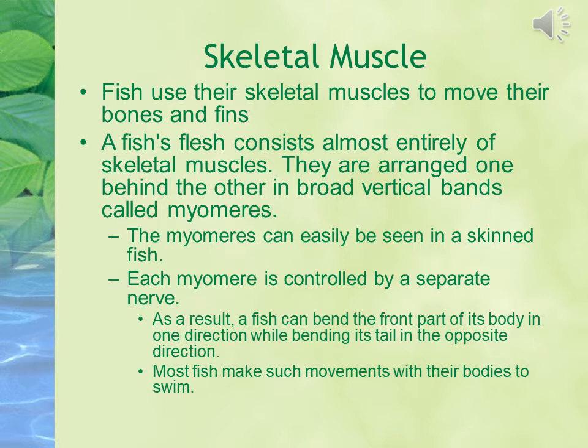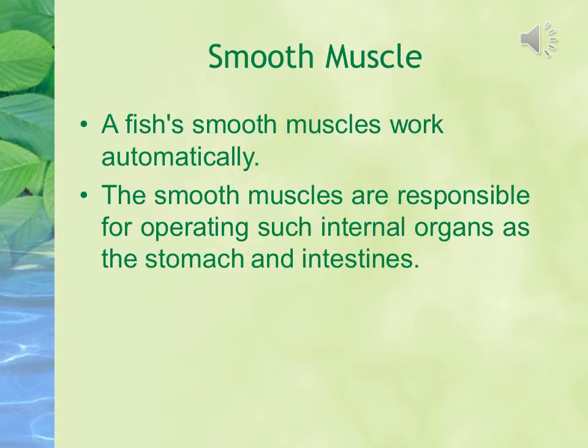Each myomere is controlled by a separate nerve. As a result, a fish can bend the front part of its body in one direction while bending its tail in the opposite direction. Most fish make such movements to swim. A fish's smooth muscles work automatically and are responsible for operating internal organs such as the stomach and the intestine.